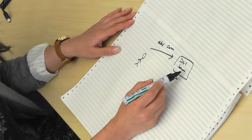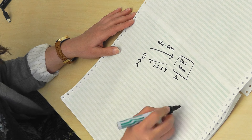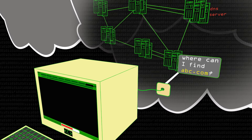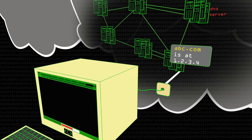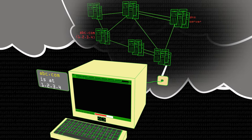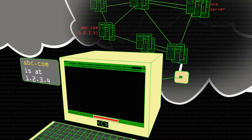Either the DNS server would already know the IP address corresponding to abc.com, or it would ask other DNS servers recursively on the internet and find the IP address. Once it has that IP address, it will return it to the user. The user's browser will then use that IP address to connect to abc.com at 1.2.3.4, send an HTTP GET request for some index page, and if all works well, abc.com would respond with the corresponding web page.